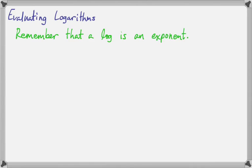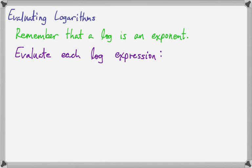Now let's look at how to evaluate logarithms. Remember always that a log is an exponent. We're going to evaluate each log expression. Your calculator will evaluate some logs, but it only knows two bases. Your calculator has one log button that says LOG and another that says LN. Those are the only two bases your calculator knows, so it can't do log base 2 or log base 7 or anything else. We're going to learn how to do them mentally.